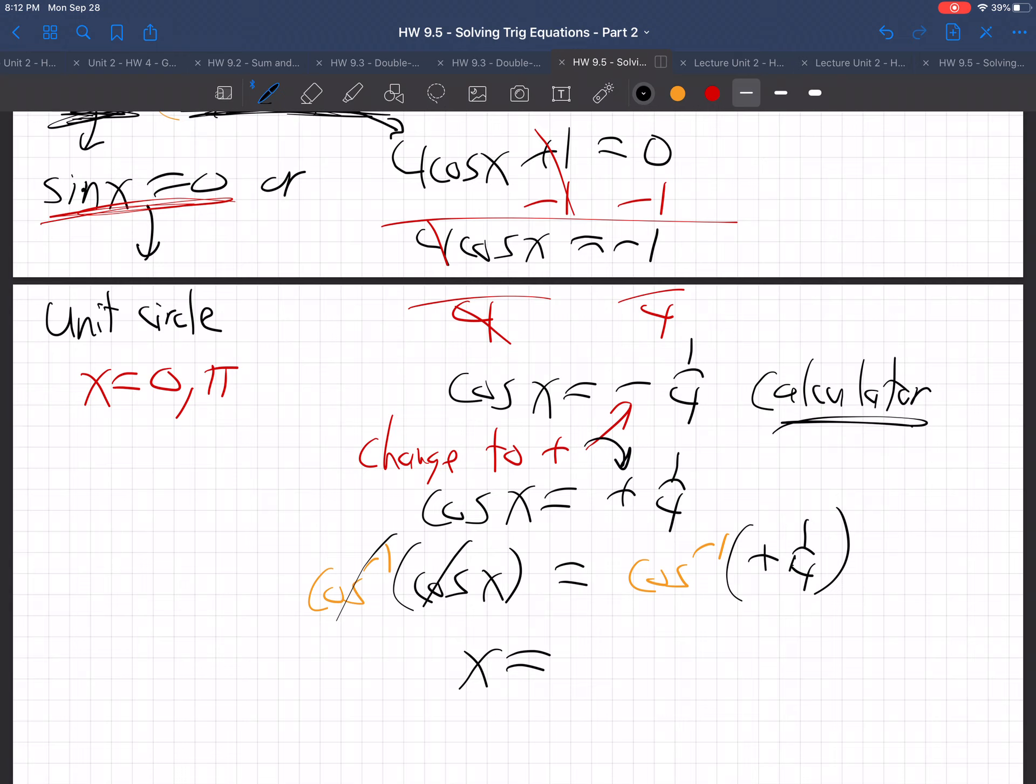Then you take your calculator, hit the cosine inverse. Oh, make sure you've got to be in radian mode at this point. Radian mode. Check your calculator. Make sure you're in radian mode. And then hit cosine inverse of 1/4th. I'm getting 1, 3, 1, 8, 1, 1, 6th. That's plenty. Use a lot of digits just to be sure. I got that answer.